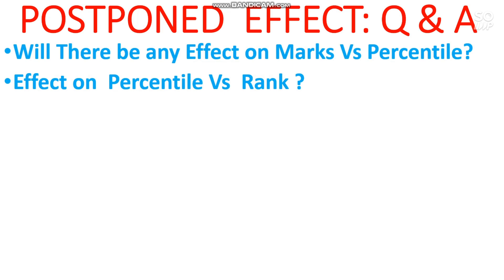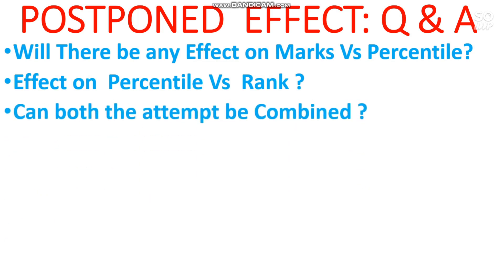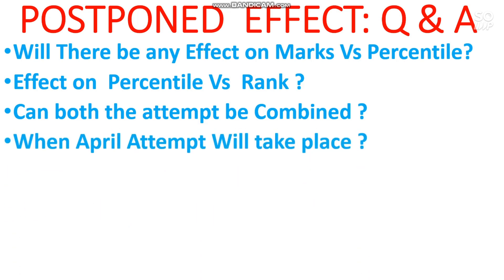The next question: can both attempts be combined? Yes, if COVID cases continue to rise as they are now, there could be a combined exam. If there is not enough space to conduct both April and May attempts separately, there should be at least 15 days gap between them. You can expect the April attempt to be held in the second half of June, giving you around 40 to 50 days to prepare. Be prepared for the scenario where both exams are combined, as competition level will increase.